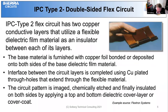Type 2 has two copper conductive layers that utilize a flexible dielectric material as its insulator between each of the copper layers. The base material is furnished with copper foil bonded or deposited onto both sides of the base dielectric. Interface between the circuit layers is completed using copper plated through holes that extend through the flexible material. The circuit pattern is image chemically etched and finally insulated on both sides by applying a top or bottom dielectric cover layer or cover coat.